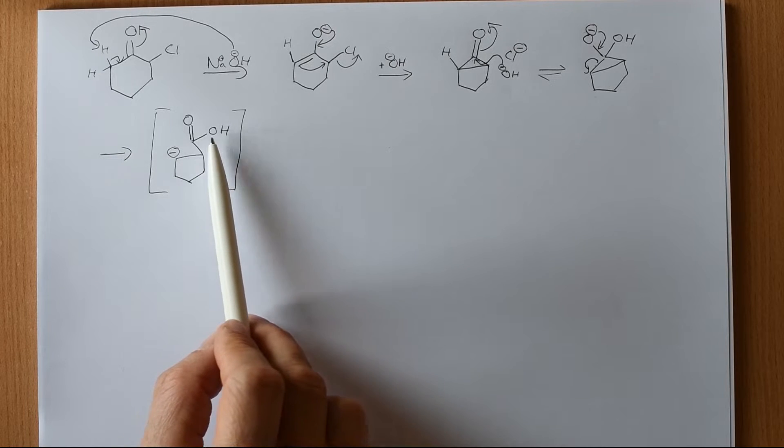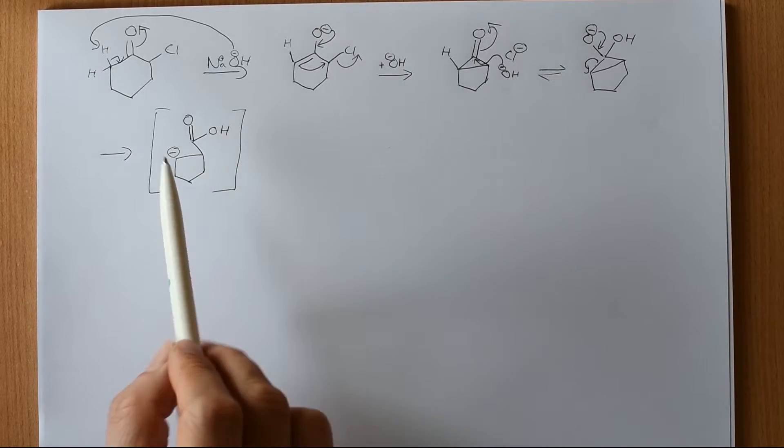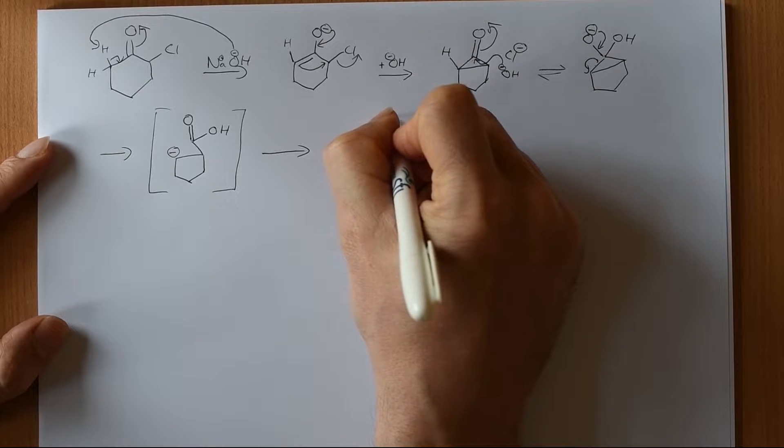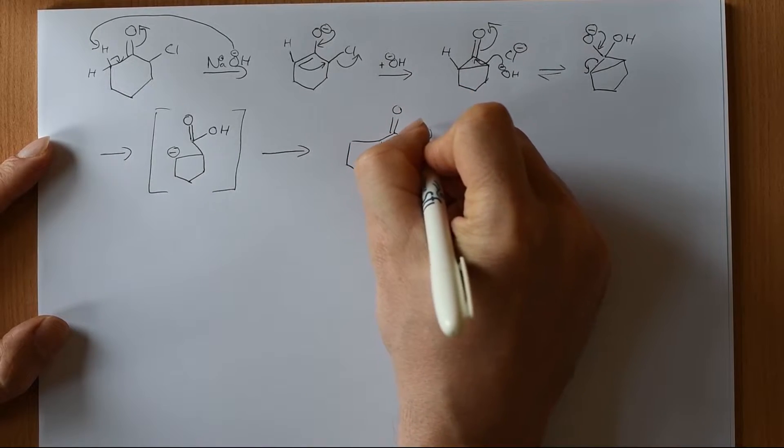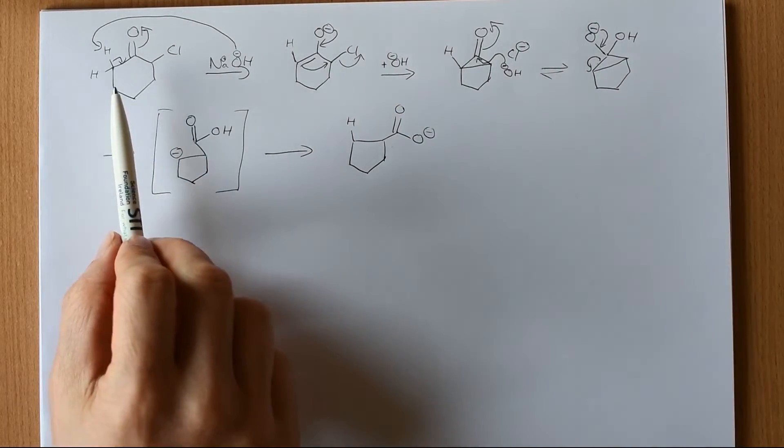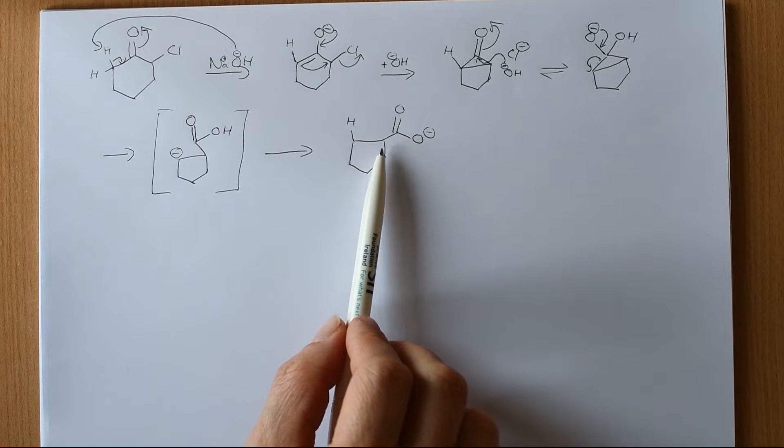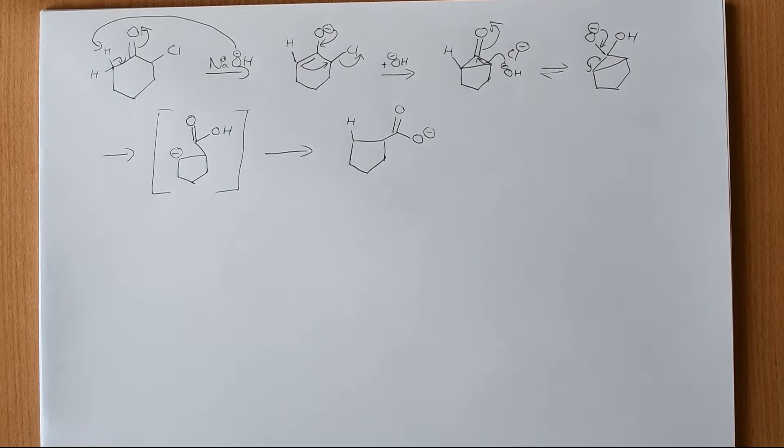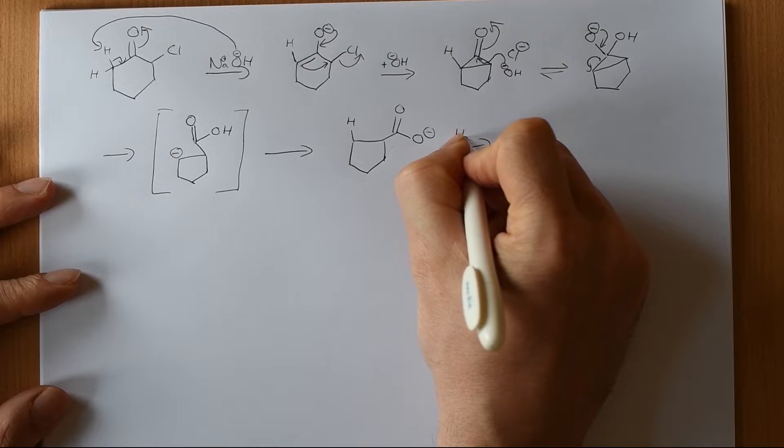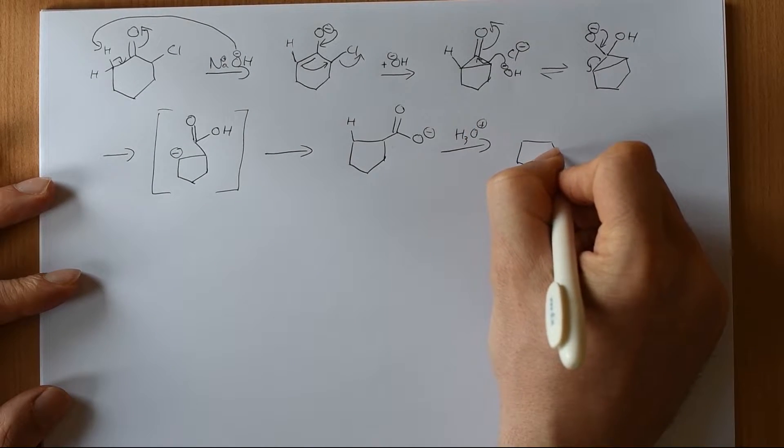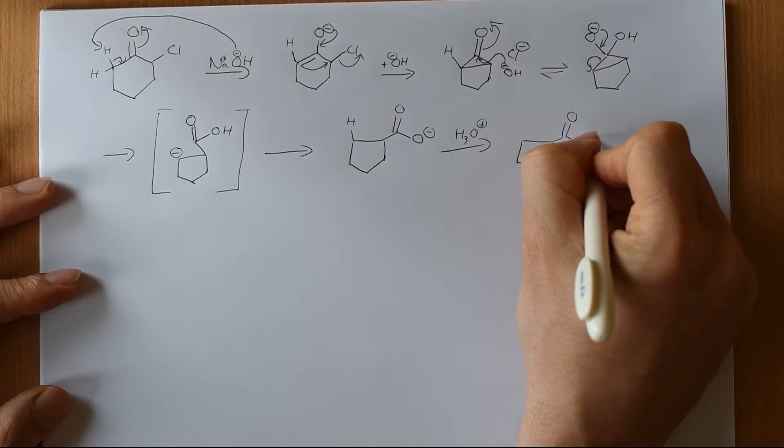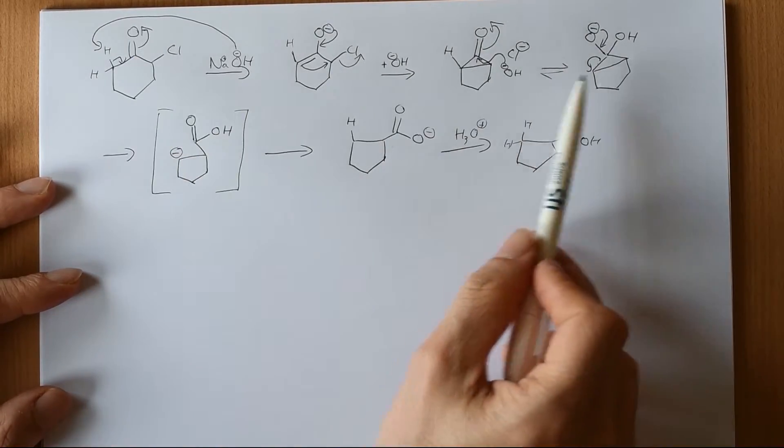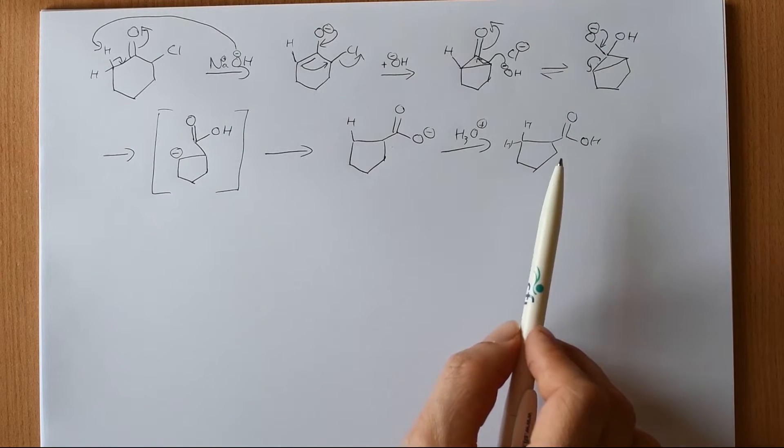So this will very, very quickly take up a proton and because this is in base, it will very, very quickly lose a proton. So what we end up with is our carboxylate and hydrogen here. And what we've done is we've contracted the ring. So we start off with a six-membered ring. We now have a five-membered ring. And if we want to recover that back out, if we were doing this in the lab, we'd add in some acid at the end and we get back our carboxylic acid. And obviously all the other hydrogens are in there, but I just had that one drawn in for mechanistic clarity at the beginning. Excellent.